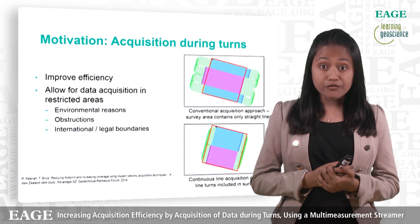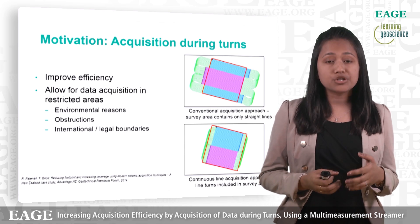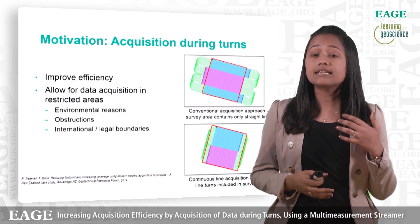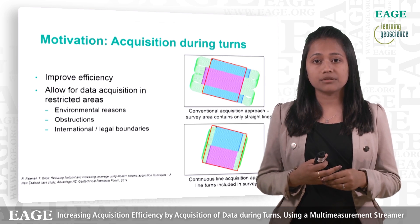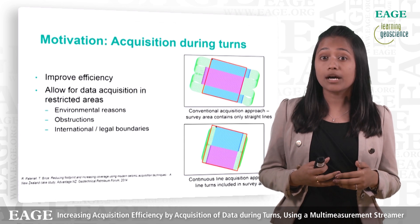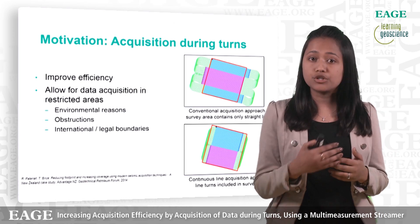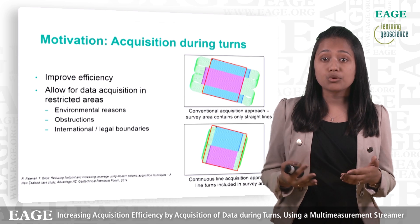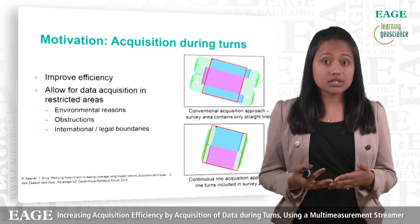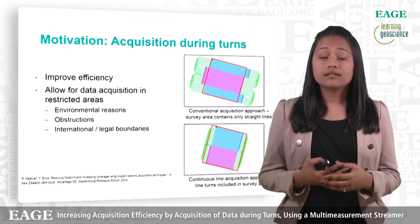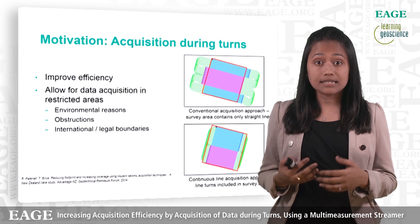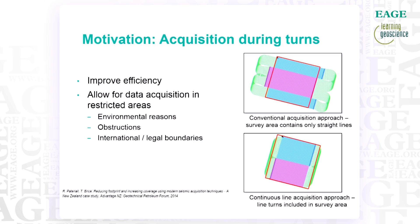Acquiring data in turns is beneficial in that the line change time is potentially reduced to zero, the vessel is continuously in production mode, and this method has a potential for 100% vessel utilization. Also, this enables us to acquire data in areas where previously we could not have reached because of the turns, such as close to restricted zones, shallow waters, underwater obstructions close to block or national boundaries. The aim of the study and subsequent talk is therefore to show how we can combine our multi-measurement streamer system with acquiring data during the turns to further increase our efficiency.